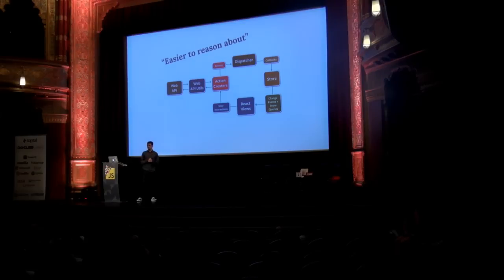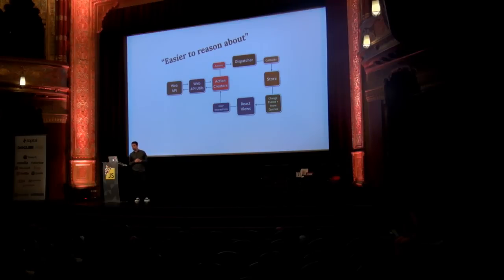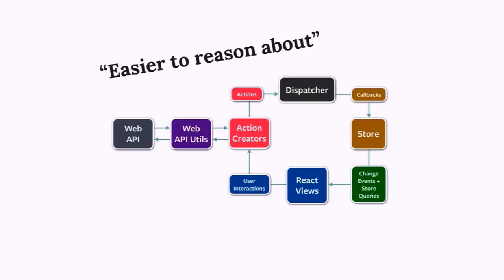Have you seen this diagram before? Does anyone know what the name of this is? So it's supposed to make user interfaces very easy, right? Instead of model-view-controller you have actions and dispatcher and action creators and store and views and view controllers and some other stuff.